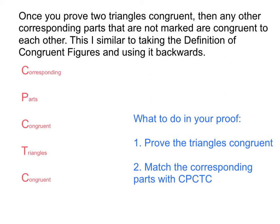What we're going to try to do in a proof is, first of all, prove that the triangles are congruent. We may have some steps before that in order to get to proving triangles congruent. Then, once we prove triangles congruent, we're going to go ahead and match any corresponding parts that we have. Essentially, they're going to ask us to prove the corresponding parts are congruent to each other with CPCTC.